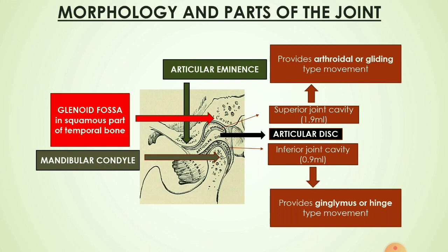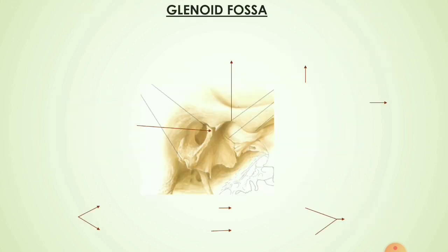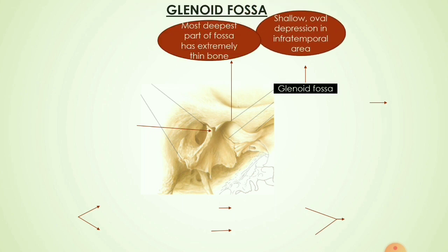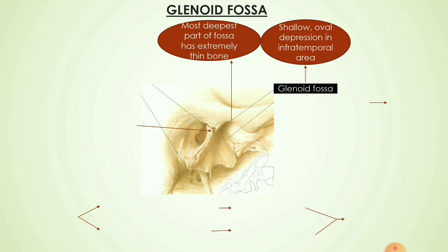There is an articular eminence present ahead of the glenoid fossa. The glenoid fossa is a shallow oval depression in the infratemporal area, and the deepest part of the fossa has extremely thin bone. Behind the glenoid fossa there is an external acoustic meatus, which is separated from the glenoid fossa with the help of the thin tympanic bone.